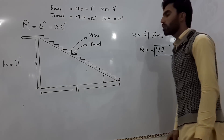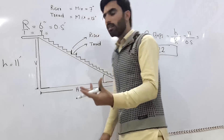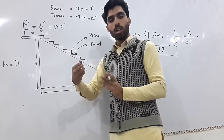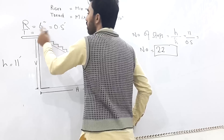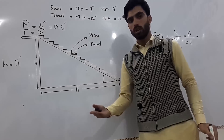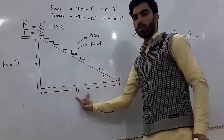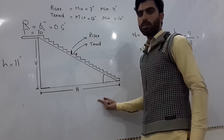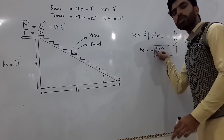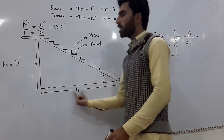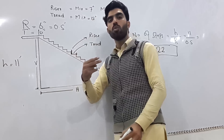Now, if you want to find the horizontal distance required for the staircase — for example, to go up 11 feet — you need to calculate how much horizontal distance will be needed. We have 22 steps, so you multiply the number of steps by the tread dimension to get the total horizontal distance required.